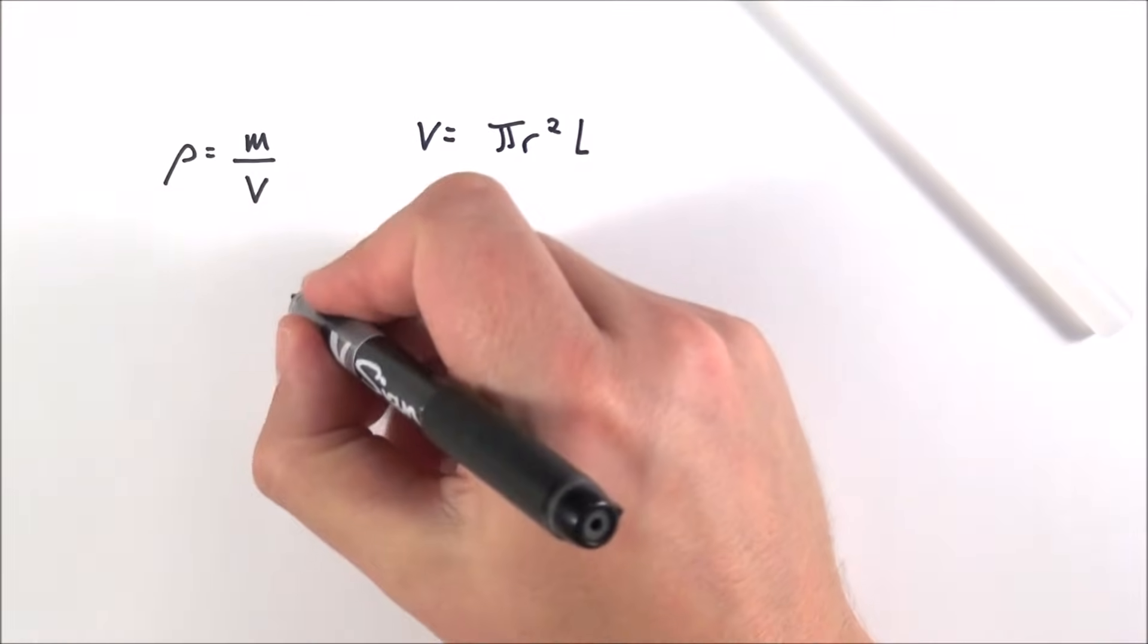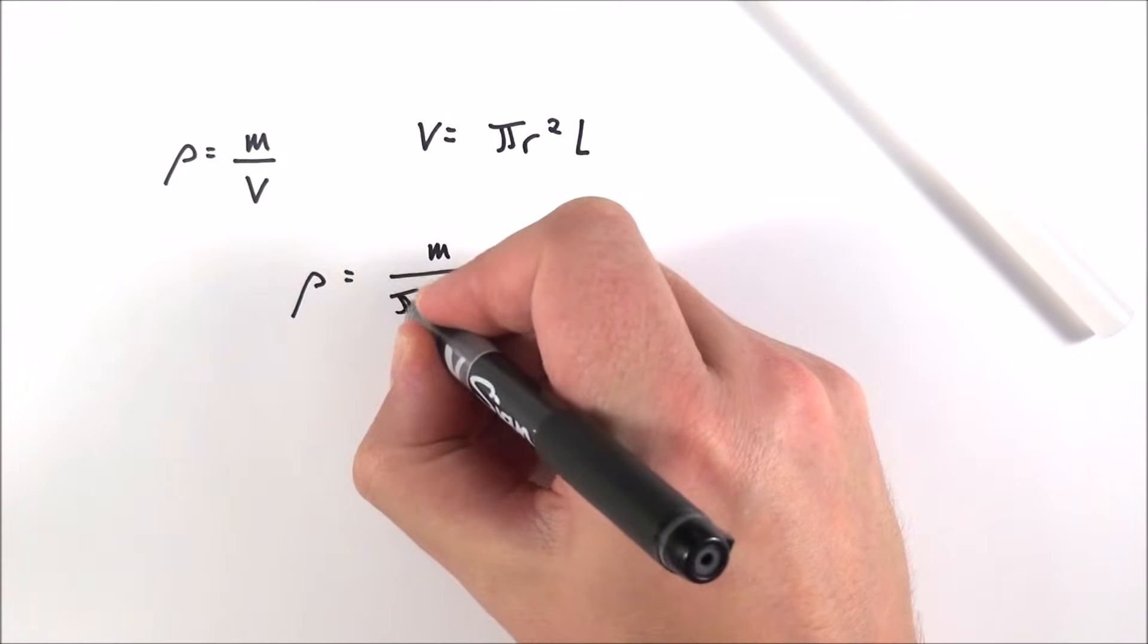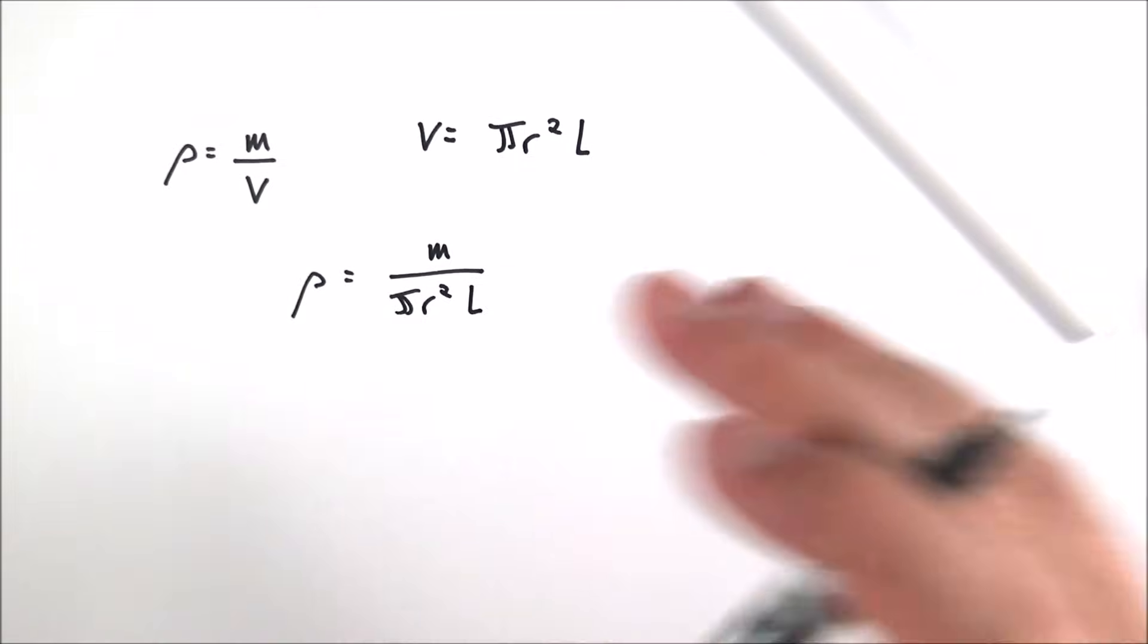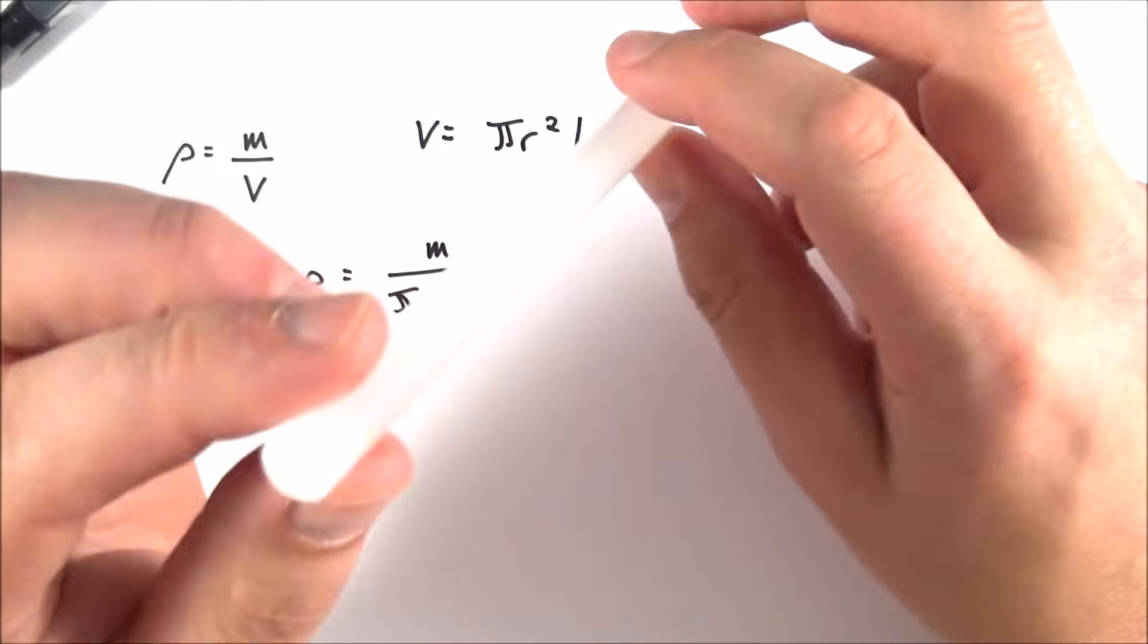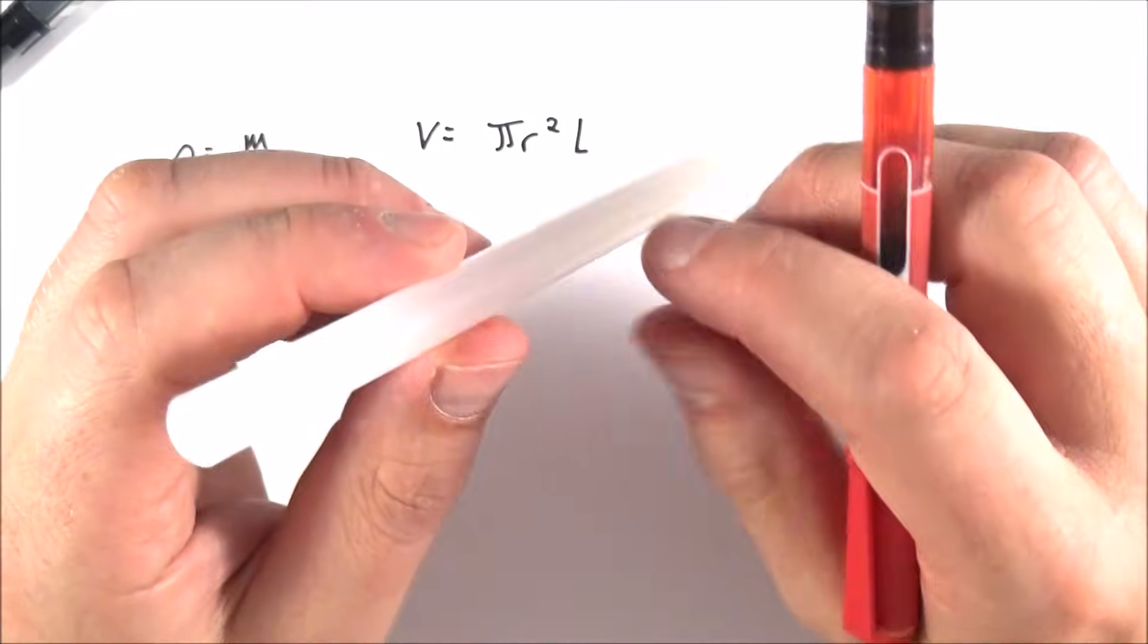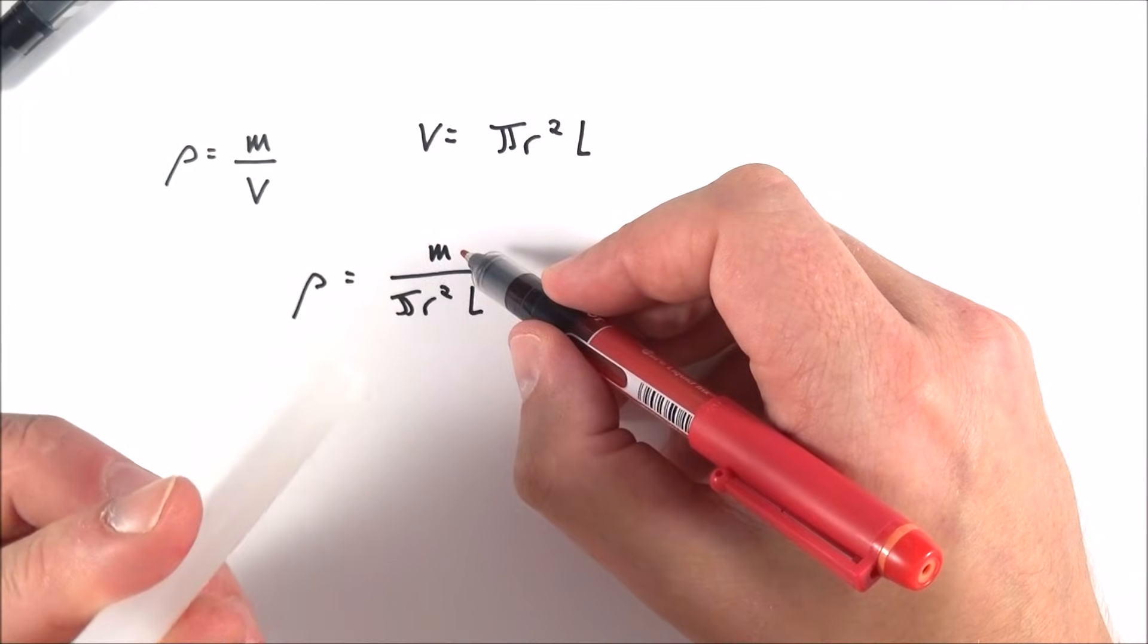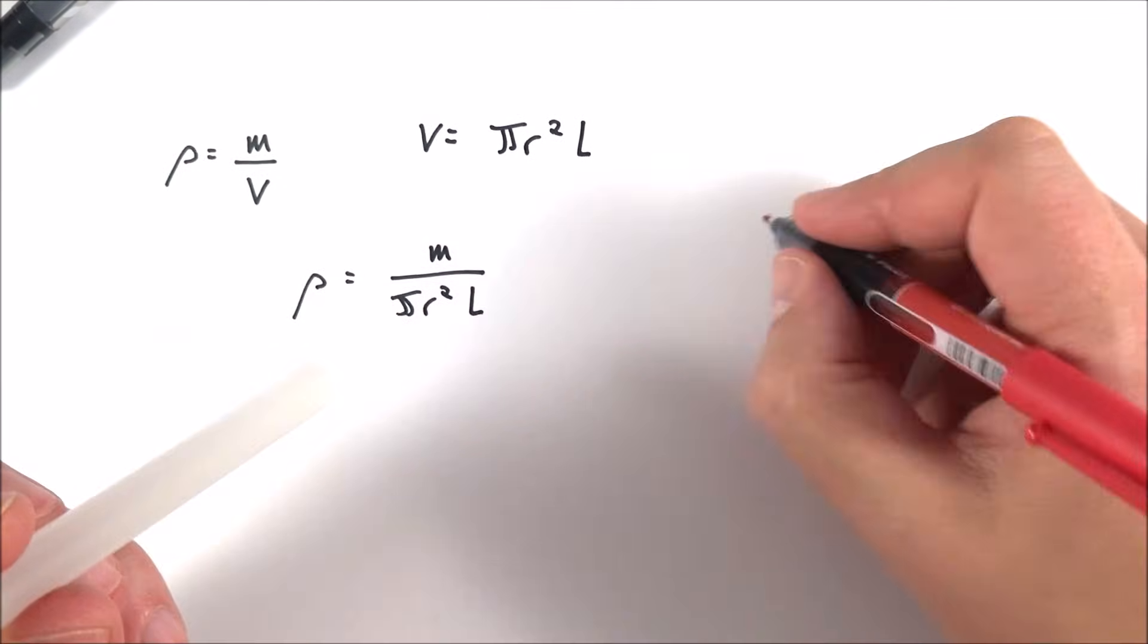To work out its density, the density is going to be equal to its mass divided by pi r squared L. I can put some numbers in, but what I really like to do is work out how certain I am about the final density. In order to do that, I need to know the uncertainties in all the measured values I'm using, so I need to know my uncertainty in the mass, my uncertainty in the radius, and my uncertainty in the length.